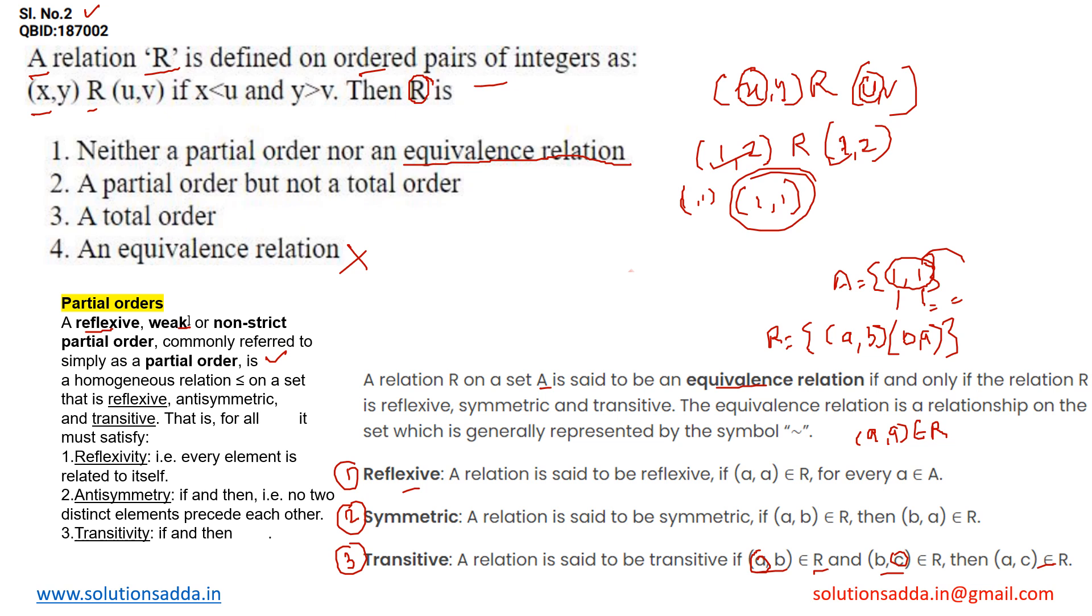When a relation satisfies reflexivity, anti-symmetry, and transitivity. We know at the first place that this type of statement will never satisfy the reflexivity of a relation, which means it will not come under the partial order relation as well as under the equivalence relation.